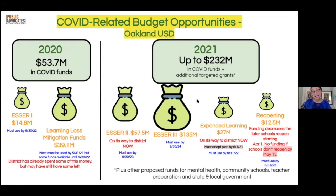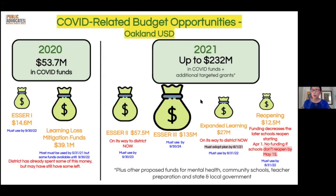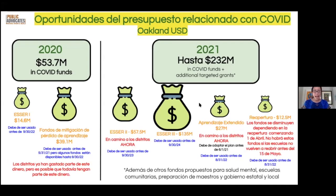The biggest source of this money is from the U.S. government — bills that have been passed in Washington, D.C. It's a very significant amount of money, even compared to what districts get every year, which means it's a very big opportunity. There are also other funds in the state budget being considered right now that can go toward many of the needs that students and families are naming for your schools. We have this slide available for other school districts and will make sure to share it.